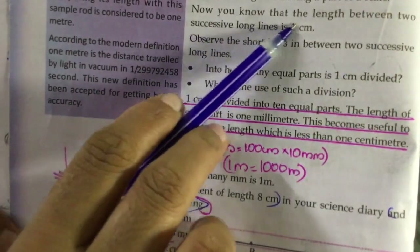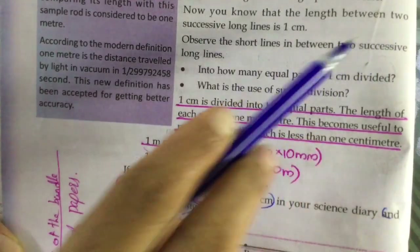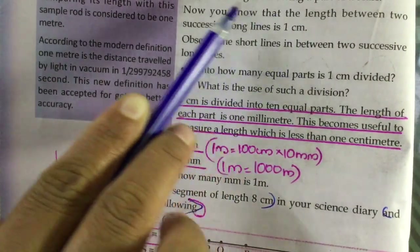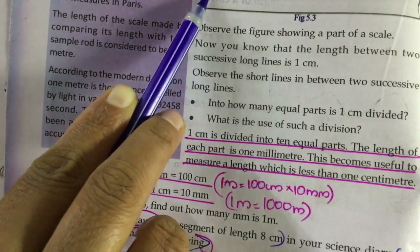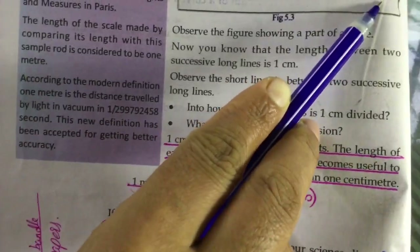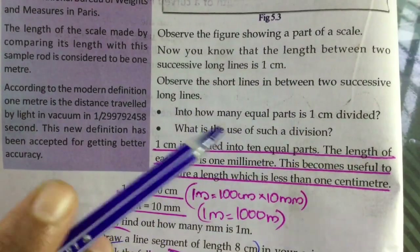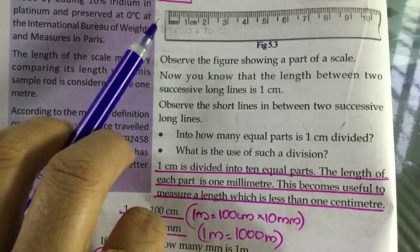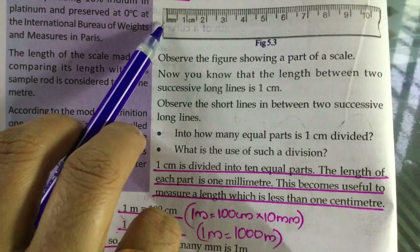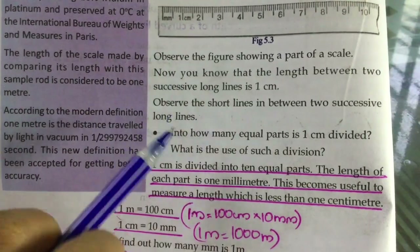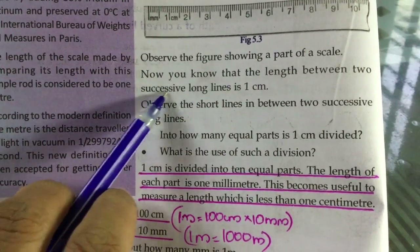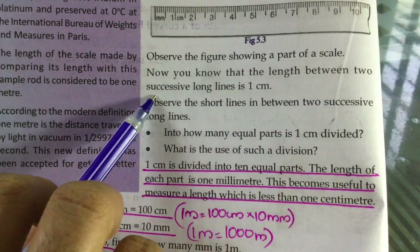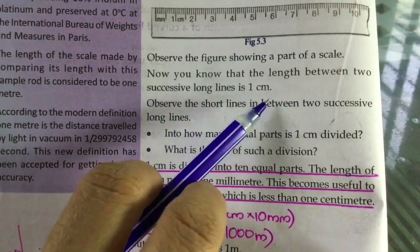Now you know that the length between 2 successive long lines is 1 centimeter. This means that the length between 2 successive long lines is 1 centimeter. As you observe, the length between 1 and 2 successive long lines is 1 centimeter.